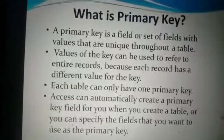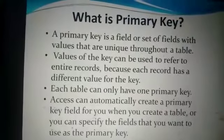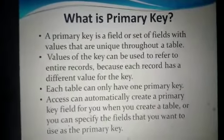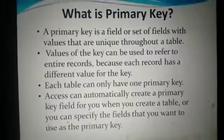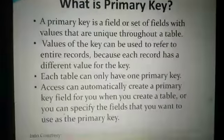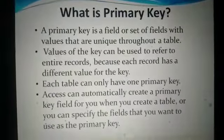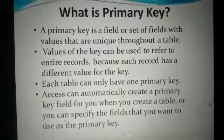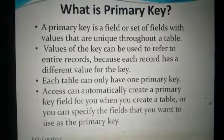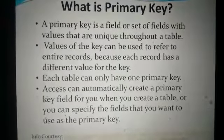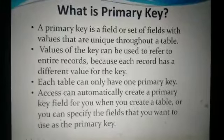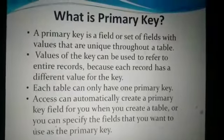And if you do not have any idea which field should be allocated the primary key, Access always — in every table you create — has one ID field by default, which is automatically numbered as the primary key.